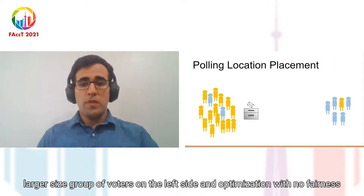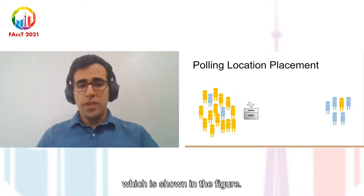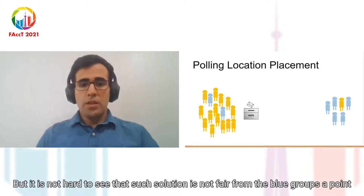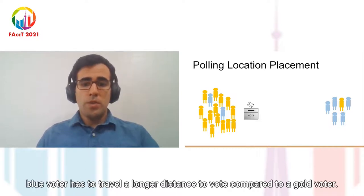Since there is a larger size group of voters on the left side, an optimization with no fairness constraints pulls the polling location in that direction, which is shown in the figure. But it is not hard to see that such solution is not fair from the blue group's point of view. And that's because, on average, a blue voter has to travel a longer distance to vote compared to a gold voter.